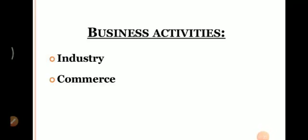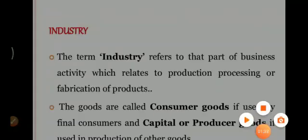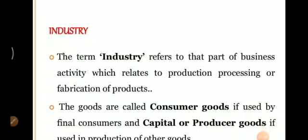Now we will discuss about Business Activity, which is completed by Industry and Commerce. The term Industry refers to that part of Business Activity which is related to the Production Process or Fabrication of a product. Goods are called Consumer Goods if used by the final consumer, and Capital or Producer Goods if used in the production of other goods.